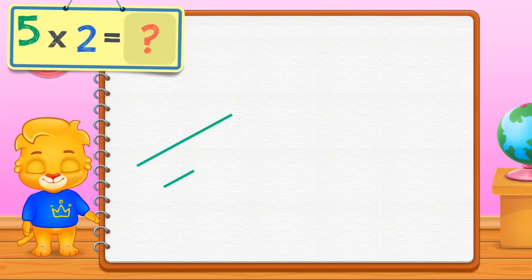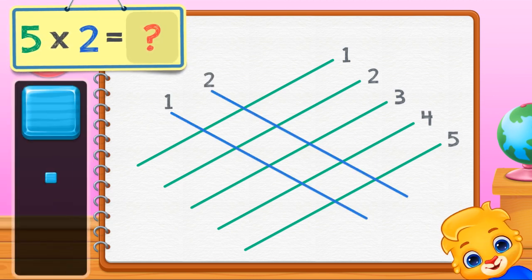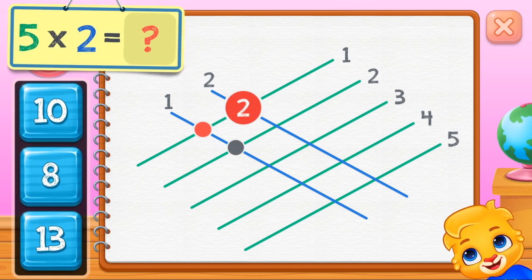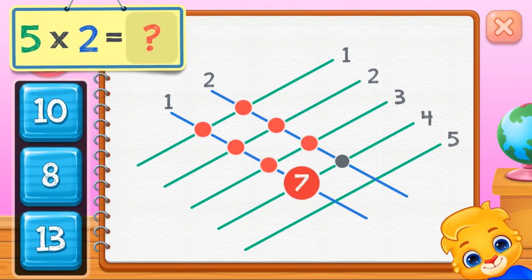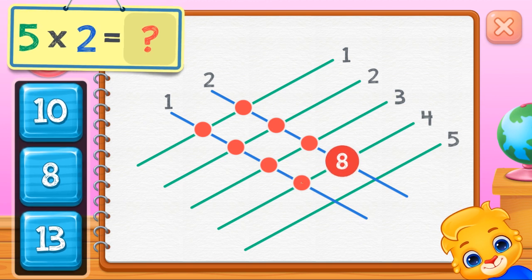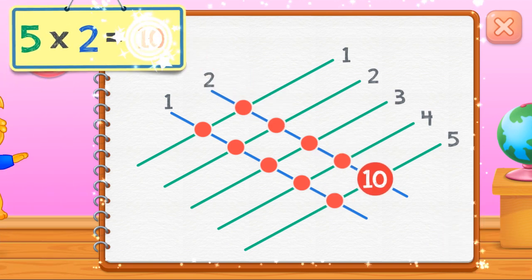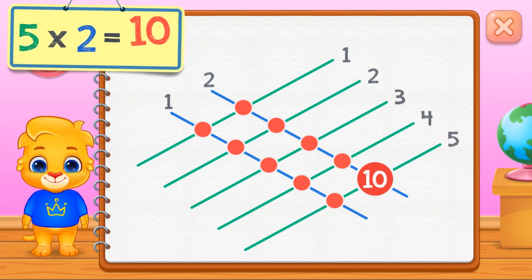Three times one equals three. Five times two equals — count the intersection points: one, two, three, four, five, six, seven, eight, nine, ten. Five times two equals ten.